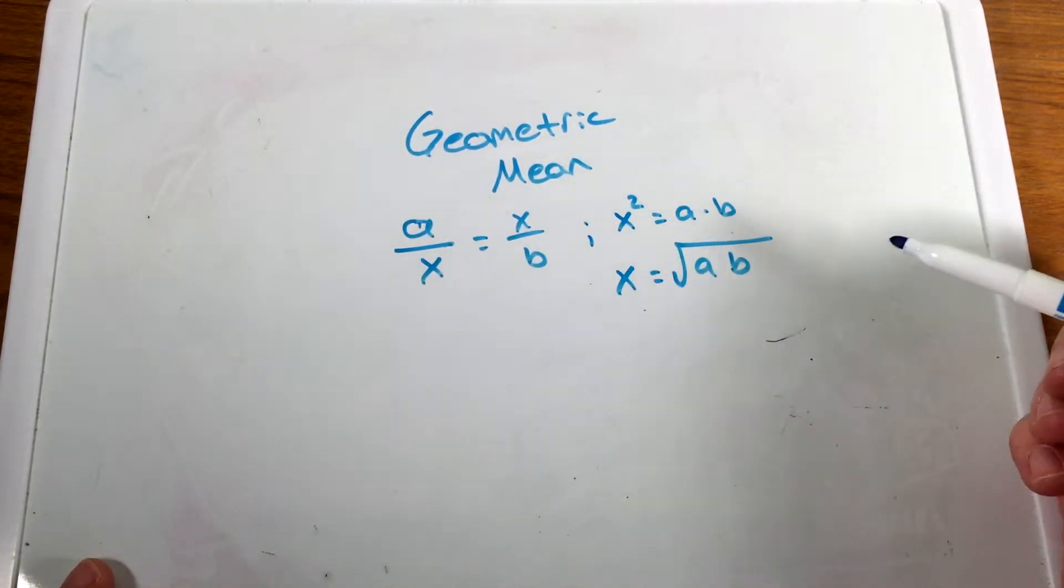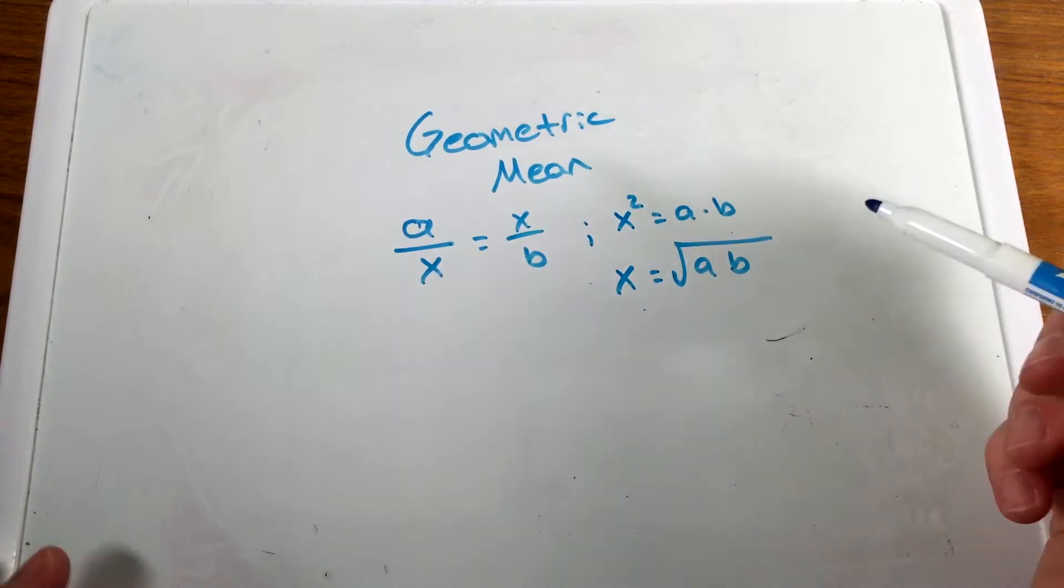And again, a and b have to be positive numbers, and so x has to be positive as well. We're not dealing with any negatives here when we deal with the geometric mean.